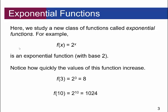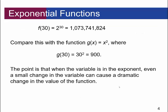Notice how the variable is the exponent — that's what tells you it's an exponential function. Notice how quickly the values of this function increase. For example, f of 3 is 2 cubed which is 8, but f of 10, that's 2 to the 10th power, is 1024. Compare this with the function g of x is equal to x squared where f of 30 is 2 to the 30th, while g of 30 is only 900. When the variable is an exponent, even a small change in the variable can cause a drastic change in the value of the function.